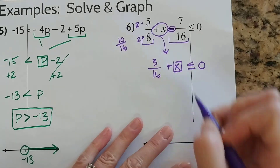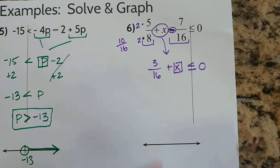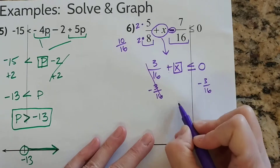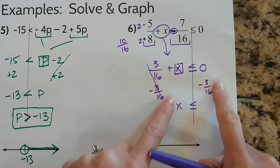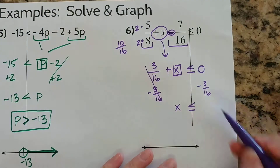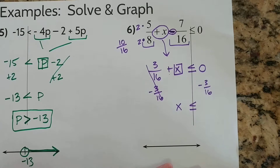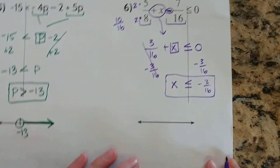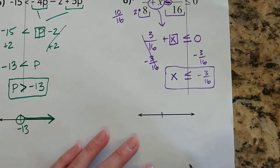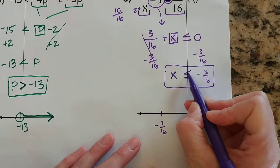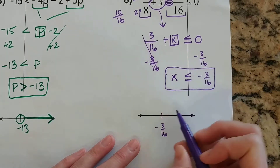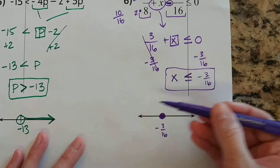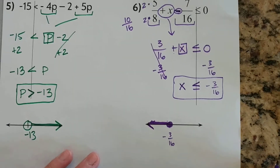Now we want to isolate the x — it's added to 3 sixteenths, so the inverse operation is minus 3 sixteenths. That will make 0. Bring down the x and the inequality symbol. We know that if we subtract the same number from both sides of an inequality it remains true. 0 minus 3 sixteenths is just negative 3 sixteenths. The x is on the correct side — circle that. When you go down to graph it, put negative 3 sixteenths on your number line. Because it has an "equal to," closed circle — I want to include negative 3 sixteenths. The inequality symbol says less than, pointing to the left, so all numbers less than go this direction. Those are all of the solutions.